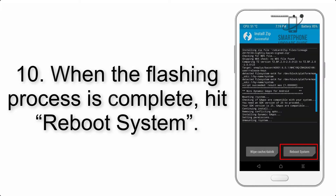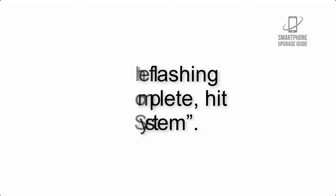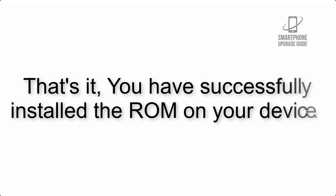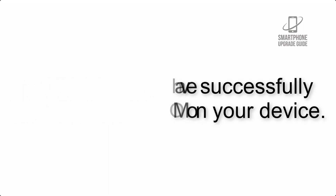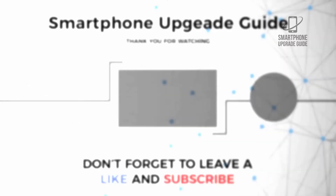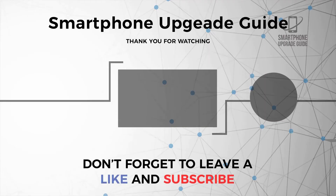Step 10: When the flashing process is complete, hit Reboot System. That's it — you have successfully installed the ROM on your device.